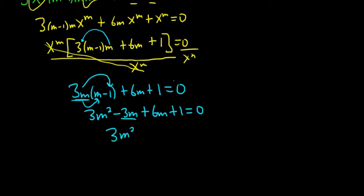So we have 3m squared. Let's see. Negative 3m plus 6m is 3m. Then we have plus 1. And this is all equal to 0. Good stuff. All right.